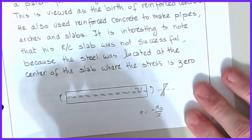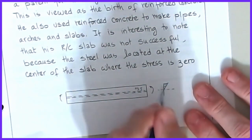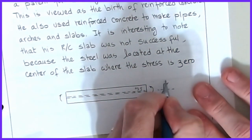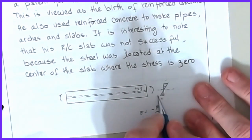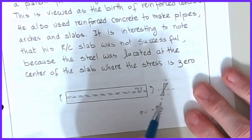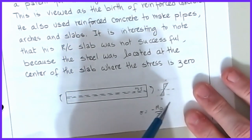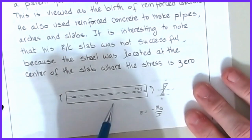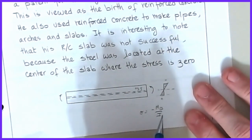Once we understand the stress diagrams, we know that if concrete is very good in compression — there's compression on one side and tension on the other — it makes more sense to put the steel toward the bottom for a flexural member loaded this way. For continuous beams, maximum stresses can occur either at the bottom or the top depending on the structure, and this starts to dictate where we put the reinforcing.